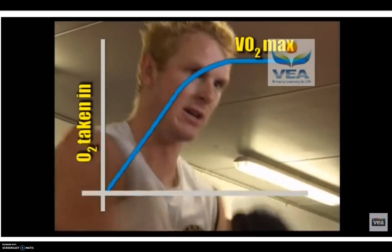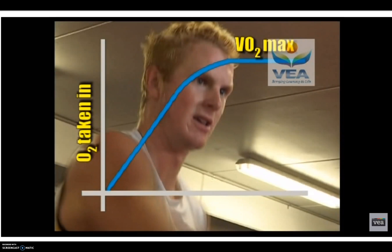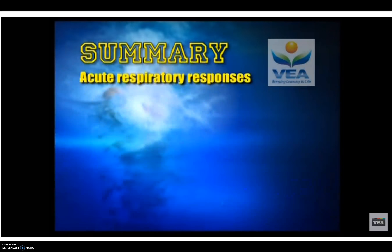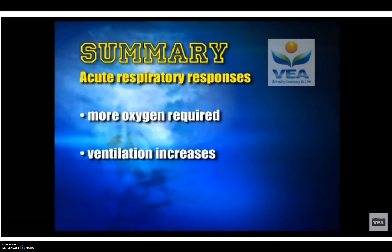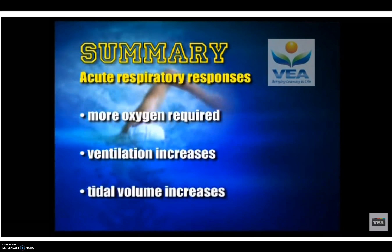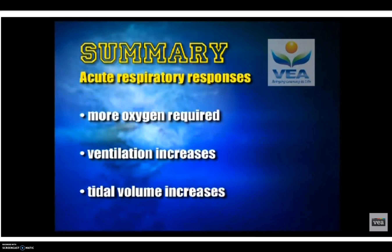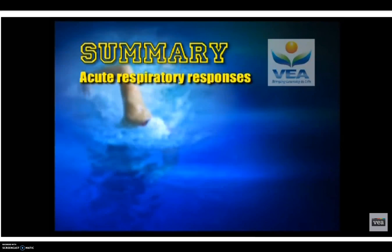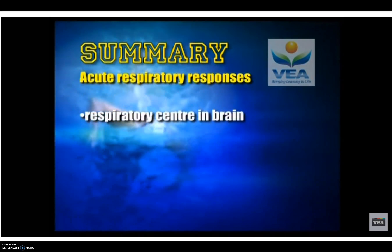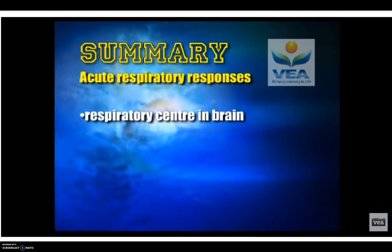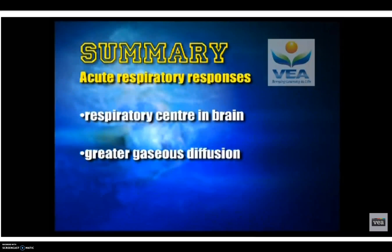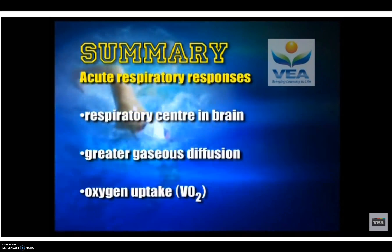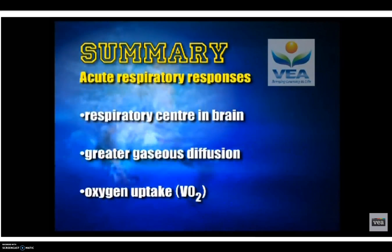VO2 maximum will be discussed when we look at chronic adaptations later in the program. In summary: as the body exercises, more oxygen is required; ventilation and tidal volume increase; breathing rate and tidal volume are controlled by the respiratory centre in the brain; higher breathing rates and tidal volume lead to greater gaseous diffusion in the lungs; and oxygen uptake or VO2 increases in response to exercise.